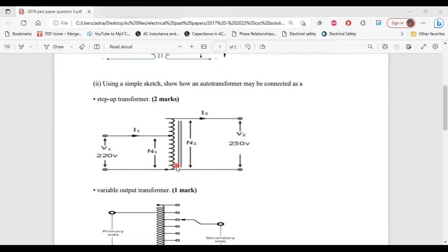Another thing you can look at is the voltage input versus the voltage output. So on the primary side, the voltage is 220 volt, and on the secondary side, it is 250 volt. So that is also another indication that the auto transformer is a step up transformer.